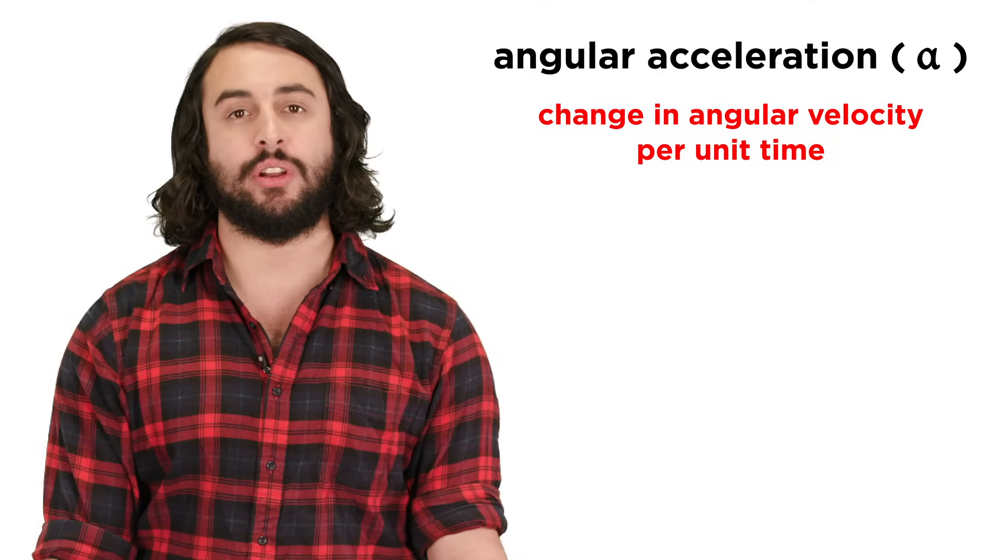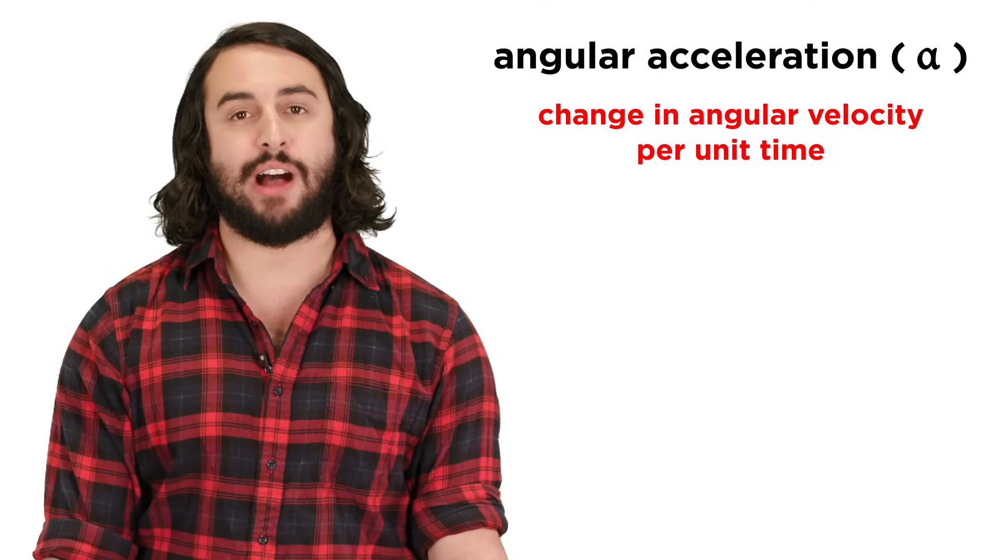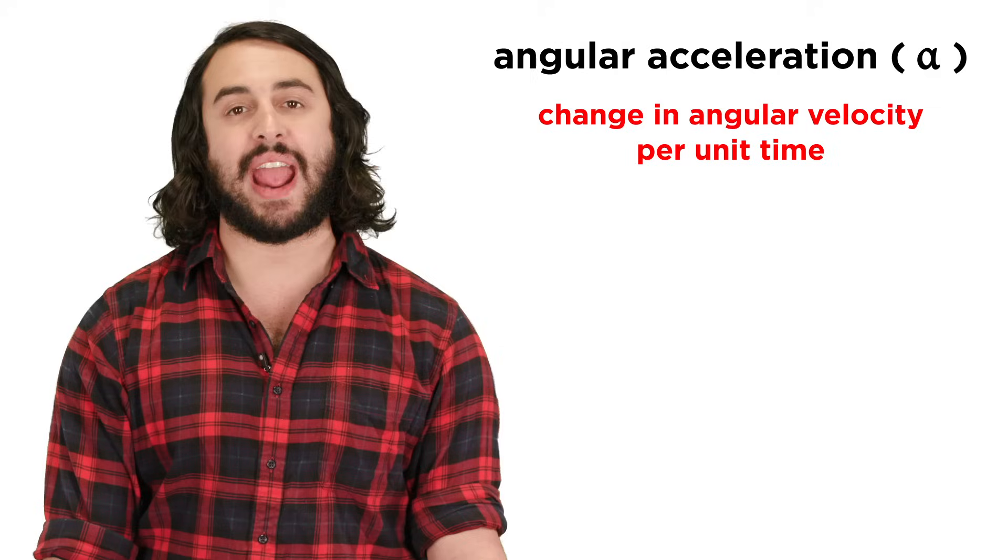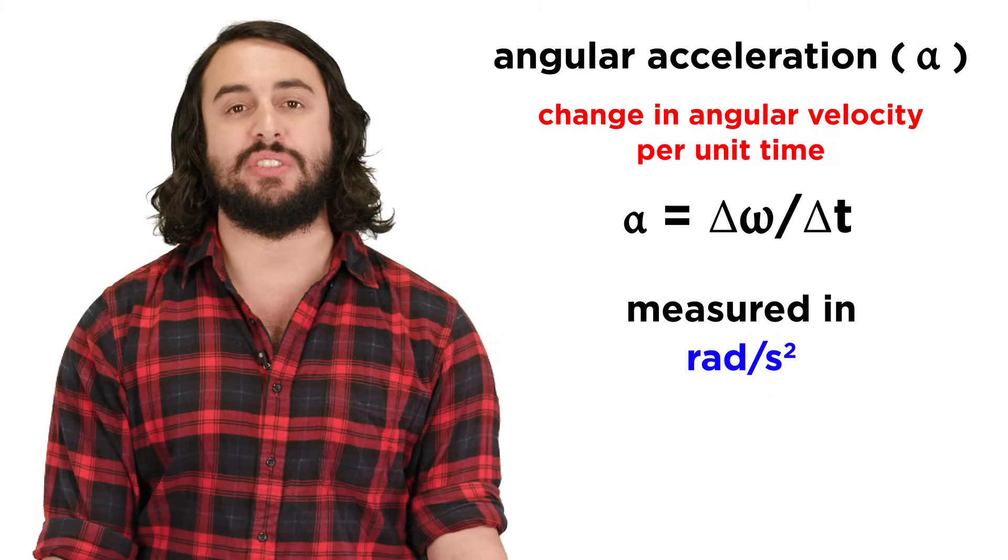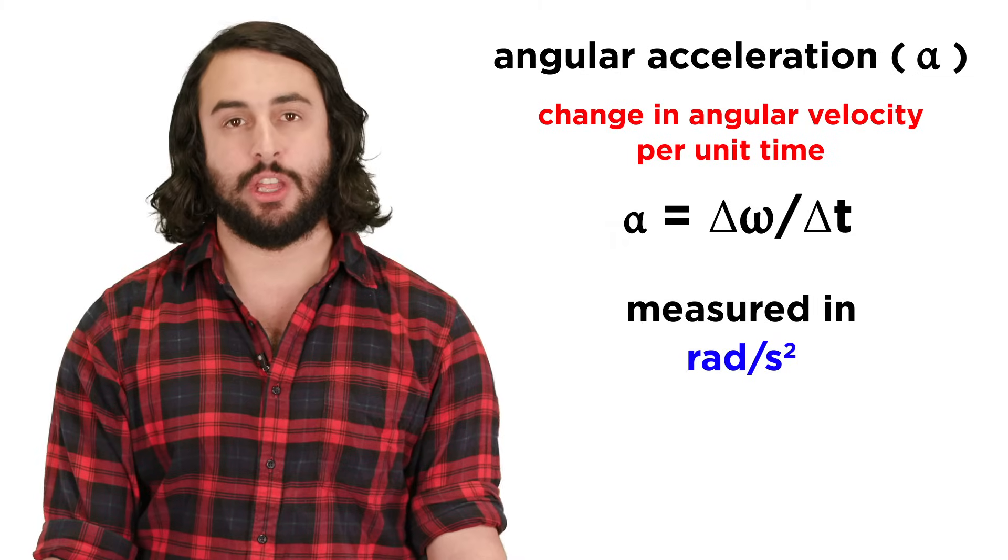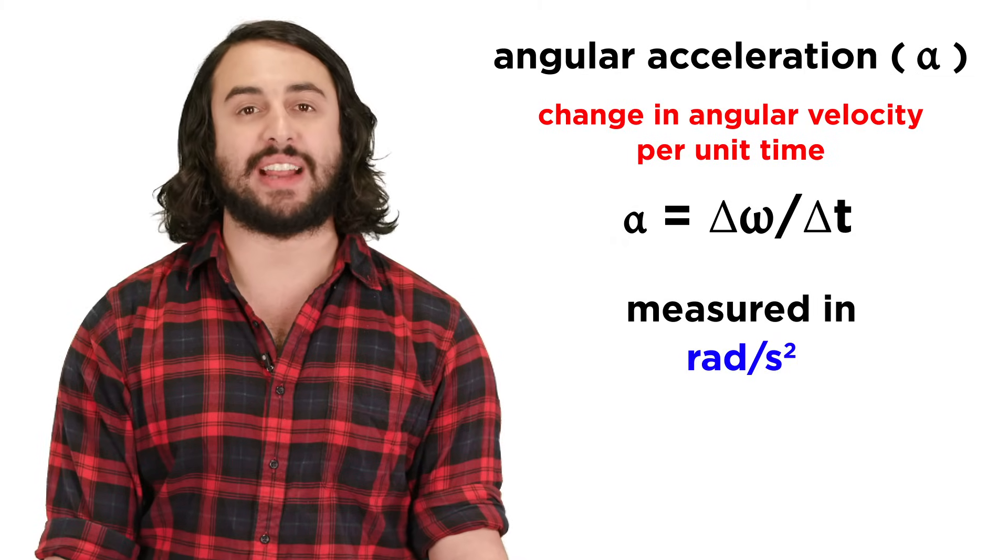Lastly, angular acceleration, represented by the Greek letter alpha, is equal to the change in angular velocity over some time period. This will be equal to delta omega over delta t, with units of radians per second squared.